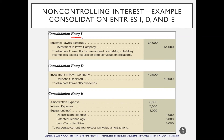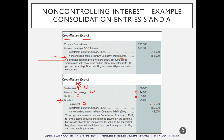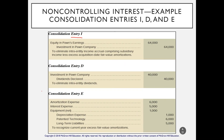We also have Entry I, which eliminates equity in Pond's earnings from King's records, and also eliminates the dividends related to Pond in King's records. Then we have Entry E for amortization related to patented technology, interest expense related to liabilities, and depreciation related to equipment. An important observation: the only two entries modified from Chapter 3 are Entry S and Entry A, where we added non-controlling interest. All other entries are the same.